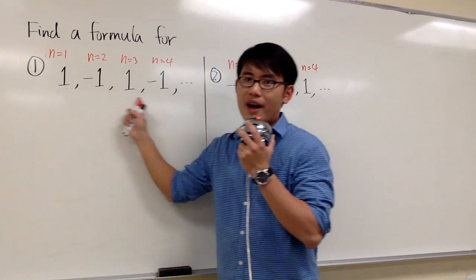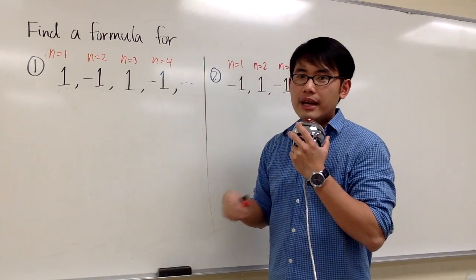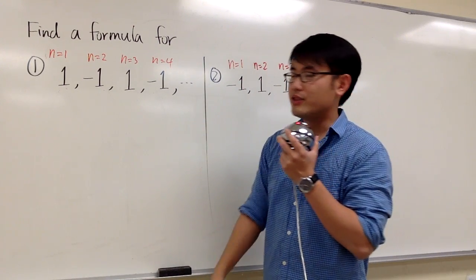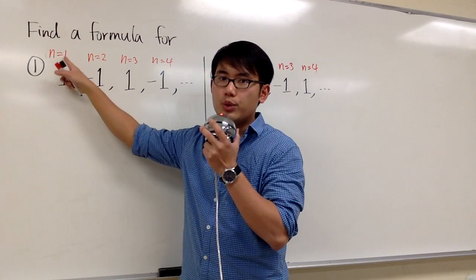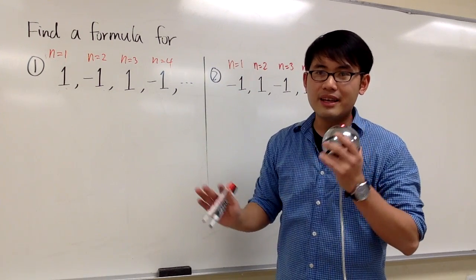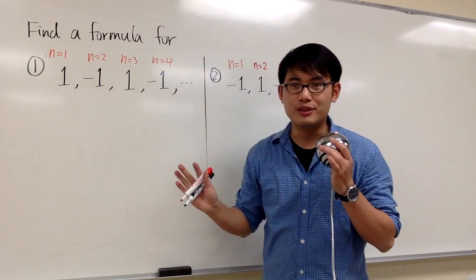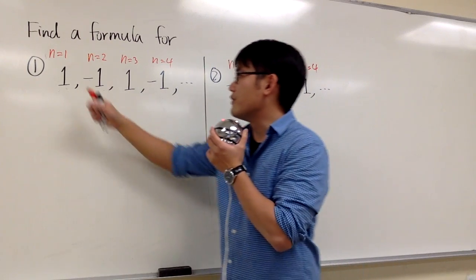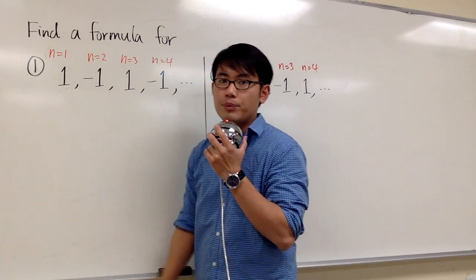We have 1, negative 1, 1, negative 1, and so on. Before we do anything, let's make a convention. We will start with n is equal to 1. Some other people may start with n is equal to 0, that's fine. Their formula may look slightly off, but it's actually the same. It just depends on your convention on what number of n that you want to begin with.